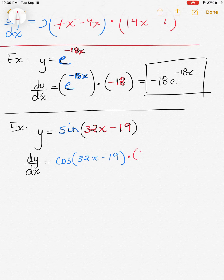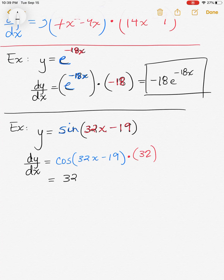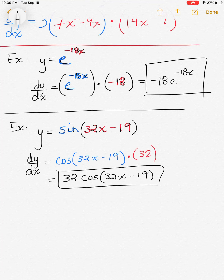Then we take the derivative of what's inside: the derivative of 32x minus 19. Applying the power rule gives us 32, and the derivative of the constant goes to zero. So the final answer — make it nice and pretty — bring that 32 to the front, because that is a coefficient not embedded inside the cosine function. So we get 32 cosine of 32x minus 19.